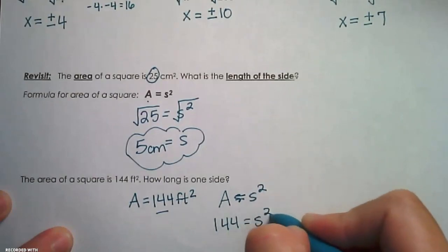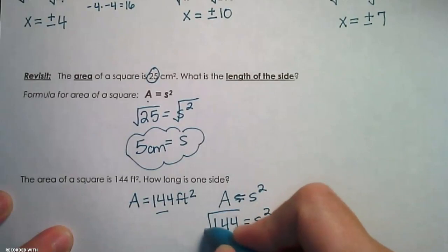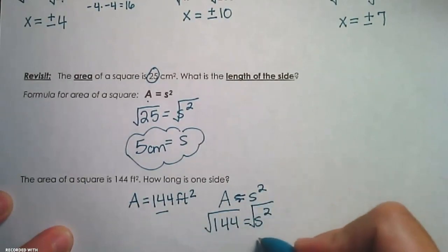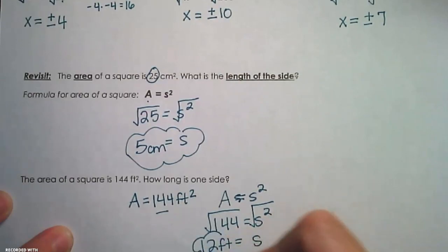144 equals side squared. And we are going to take the square root of both sides of that equation. And we get that the side is equal to 12 feet. There we go!